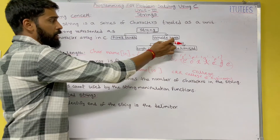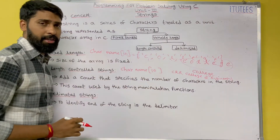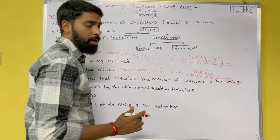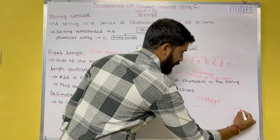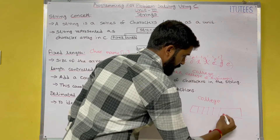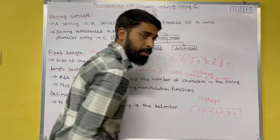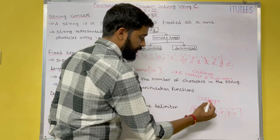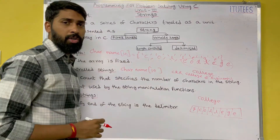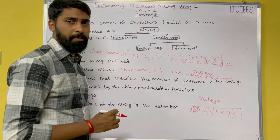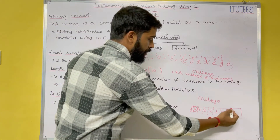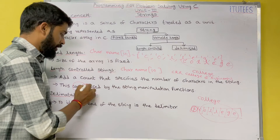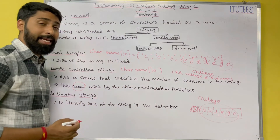Coming to variable length, we have length-controlled and delimited types. Length-controlled strings add a count that specifies the number of characters in the string. For example, to store 'COLLEGE', you store the characters C, O, L, L, E, G, E and in the first index you store the length, which is 7. This count — seven — is used by the string manipulation functions.